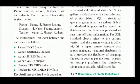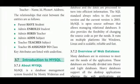The relationships that exist between the entities are as follows: Parent has Student. Admin enrolls Student. Admin hires Teacher. Admin adds Subjects. Teacher teaches Subject. Teacher is assigned to Class. Key attributes are listed with underline.